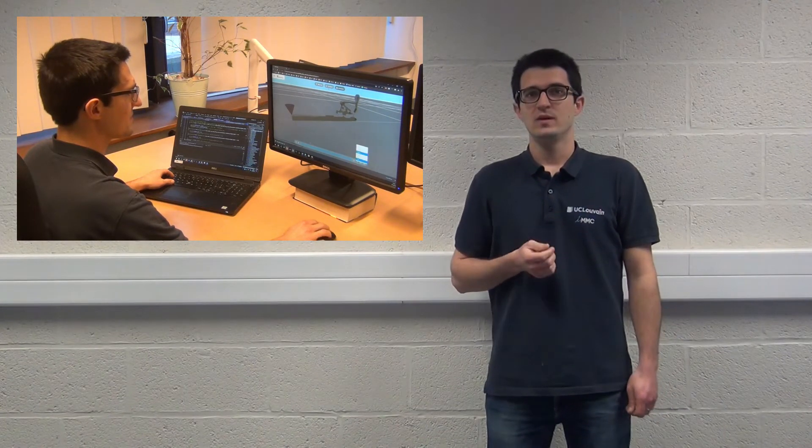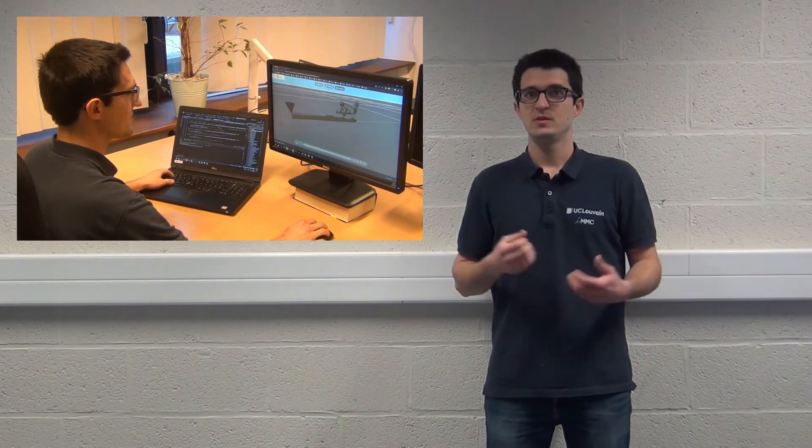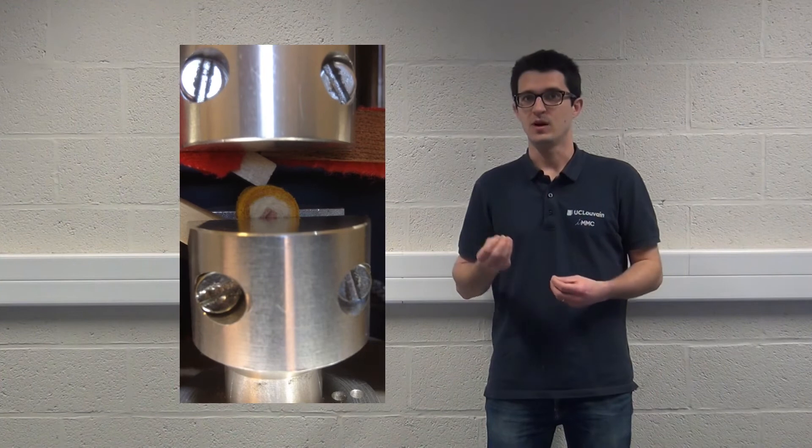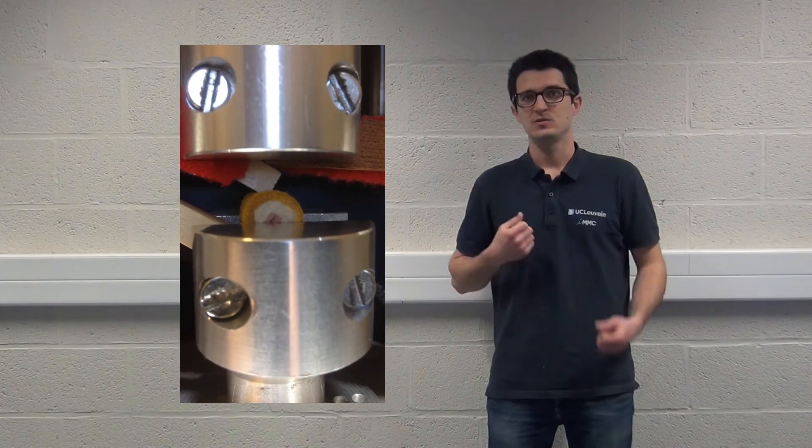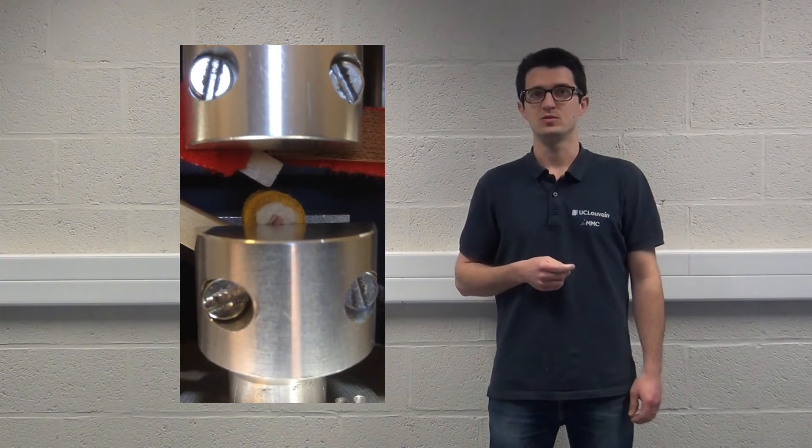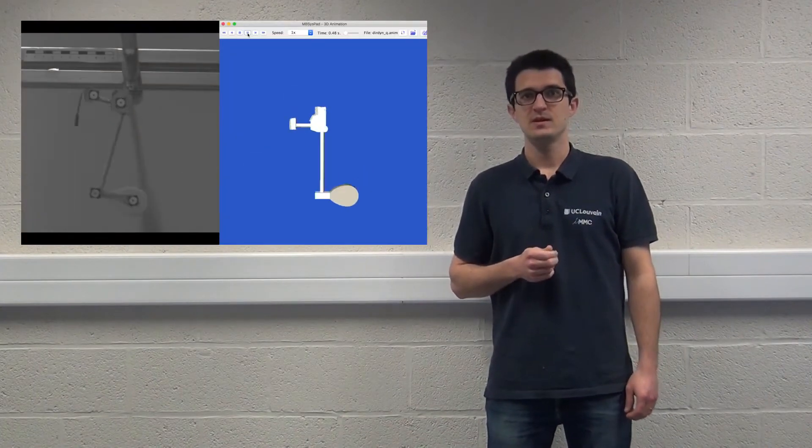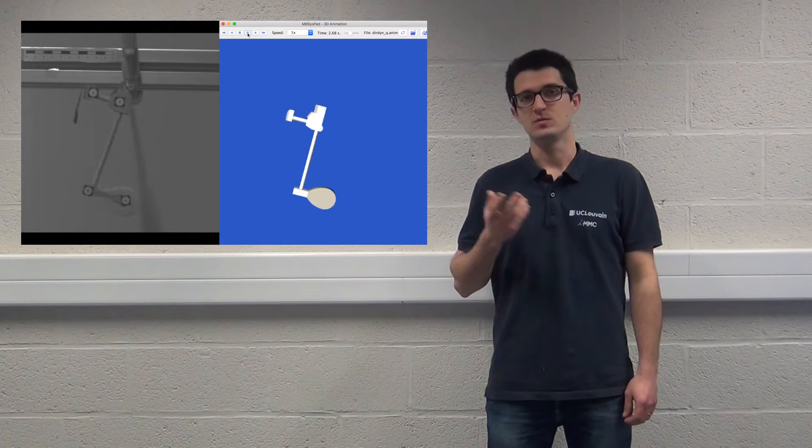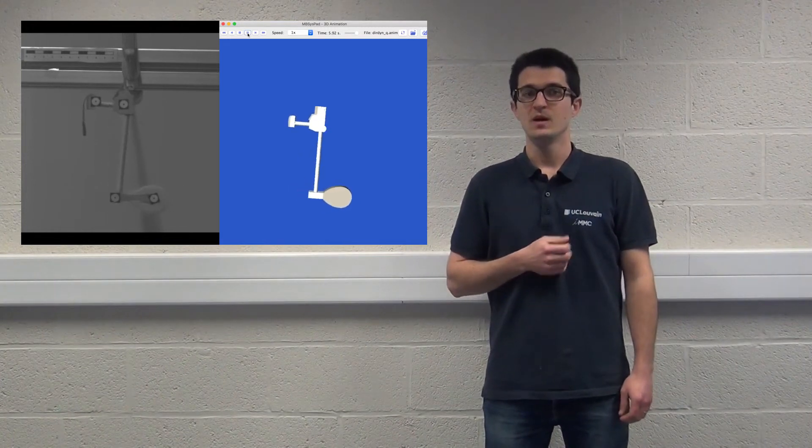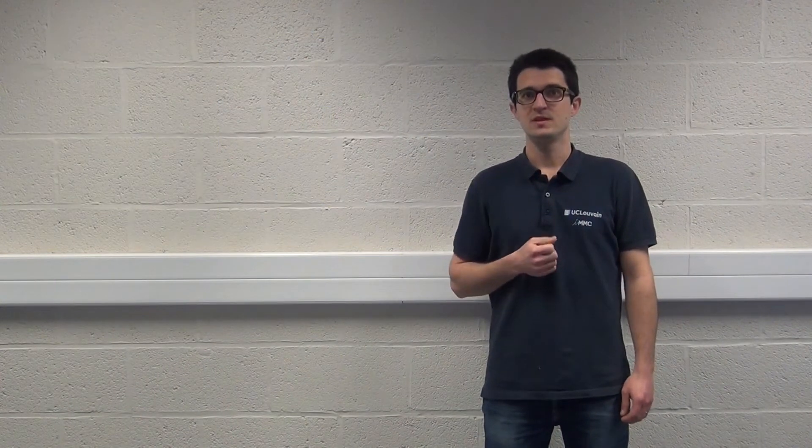But more interestingly, we have characterized the contact force between the elements in the systems. For example, between the jack and the hammer, we have characterized the normal force between those two components. Furthermore, we have characterized the friction in the joints, for example for the hammer joint. With that, we have all the set of physical parameters we need for our multibody model.